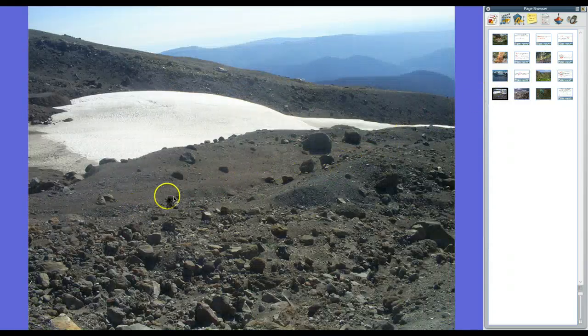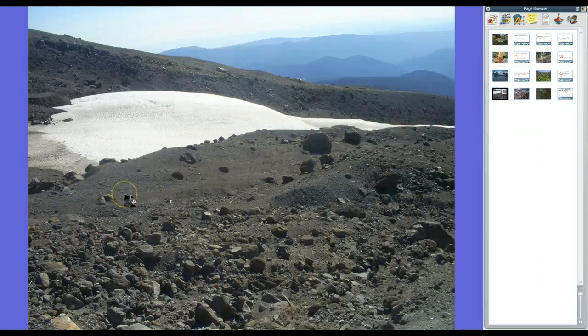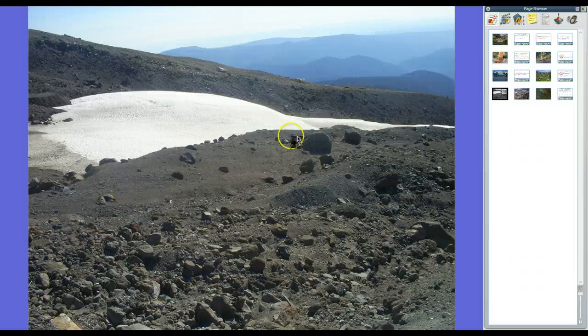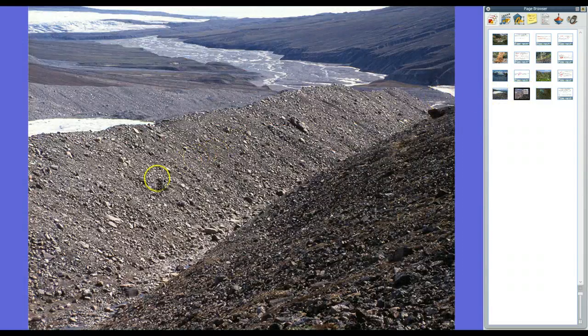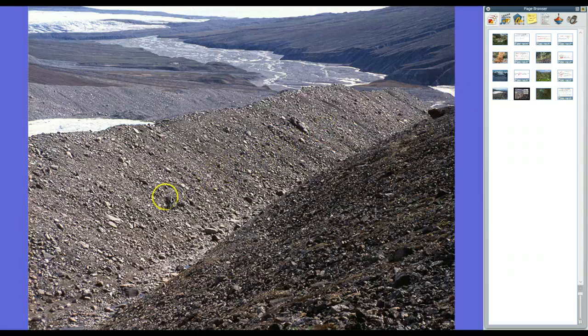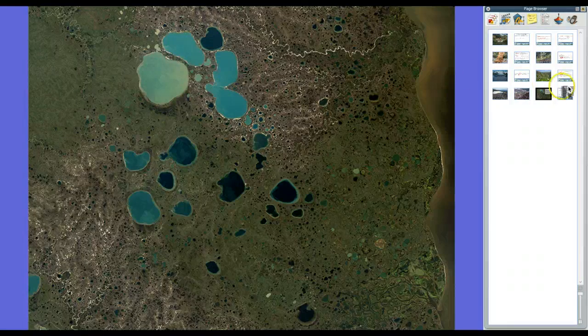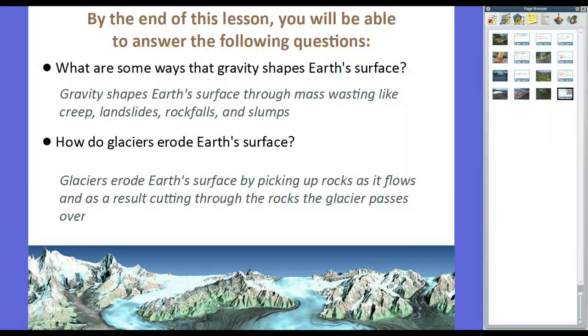It will leave till, which is the eroded sediments and stuff left off as it backs off. And at the end of it, it'll create moraines, which are piles of this rock and soil. And it'll even create lakes like these kettle lakes right here. So there you go. That's your lesson. As always, if you have any questions, please feel free to let me know. Thanks for watching.